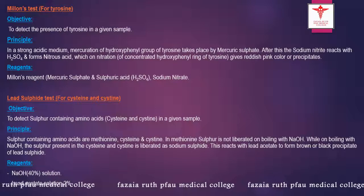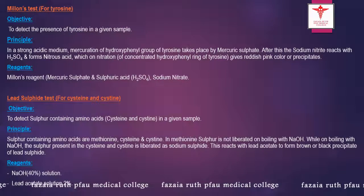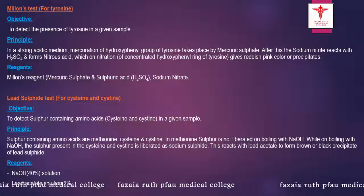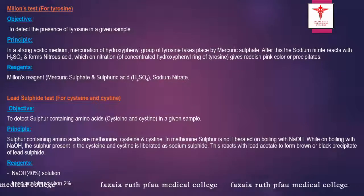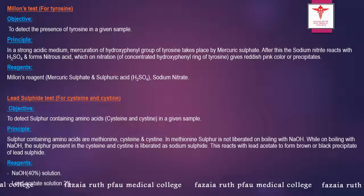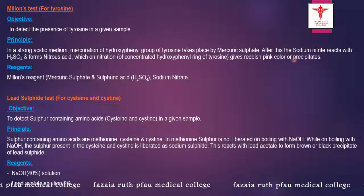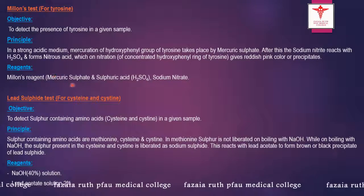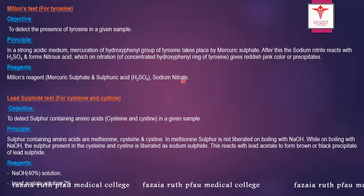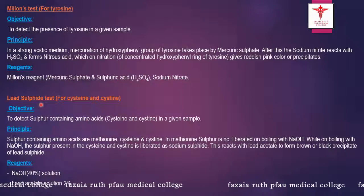We have two more tests: Millon's test, which is for the amino acid tyrosine, and the lead sulfide test for cystine and cysteine. For Millon's test, we use Millon's reagent, which consists of mercuric sulfate, sulfuric acid, and sodium nitrate. We will get a reddish pink color or precipitate, confirming the presence of tyrosine.